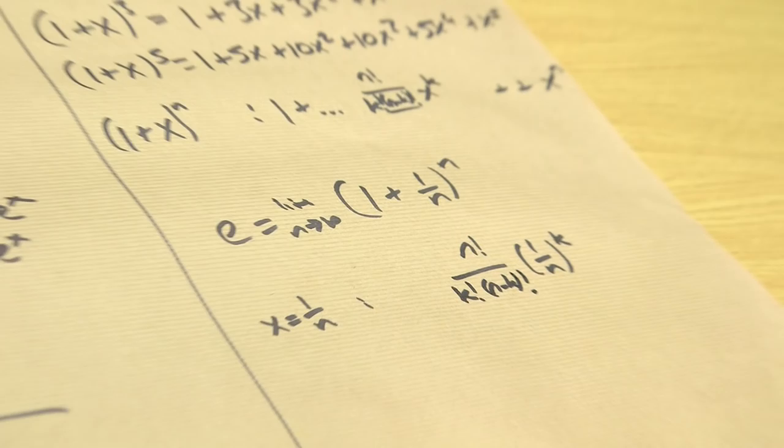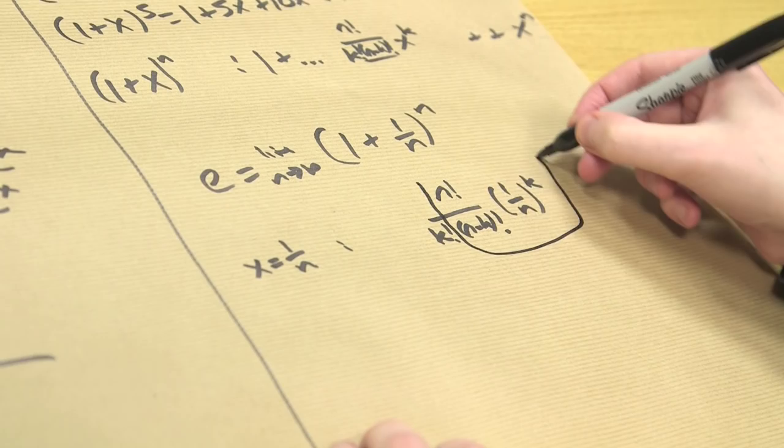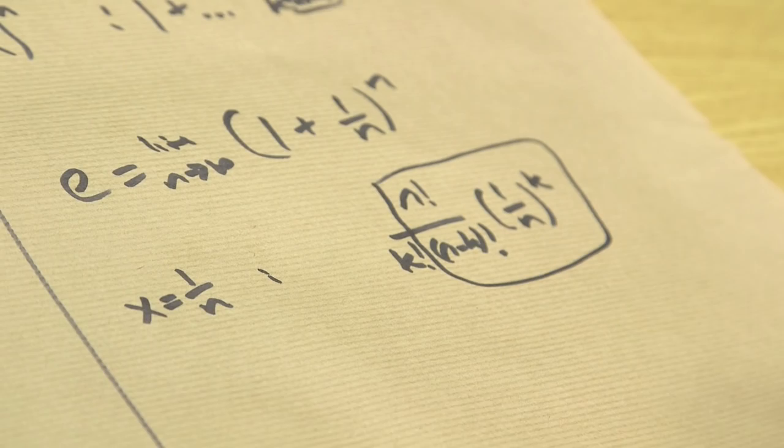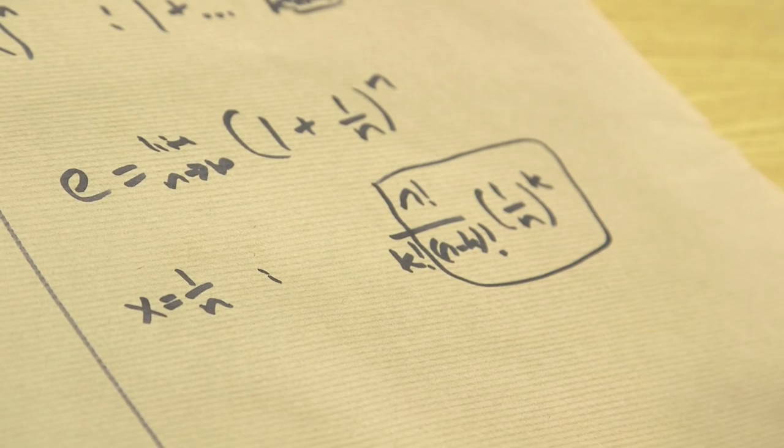But when n tends to infinity, this stuff cancels out. All that stuff tends to 1. They all cancel each other out. And this coefficient will end up being 1 over k factorial. And so that's where the formula comes from, which is just the sum of reciprocals of factorials. Binomial theorem. It's easy as that.